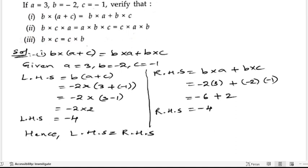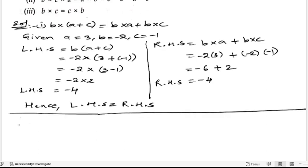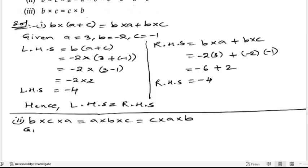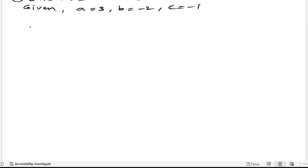Hence it is verified, or you can say hence LHS is equals to RHS. Now let us start the second bit. They have given: b into c into a is equals to a into b into c is equals to c into a into b. We know the value of a, b, c. Given: a is equals to 3, b is equals to minus 2, c is equals to minus 1. There are three parts.